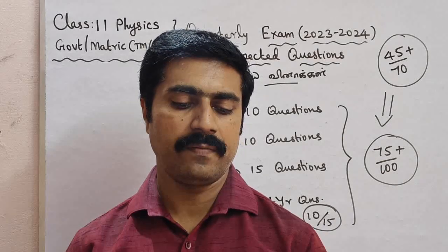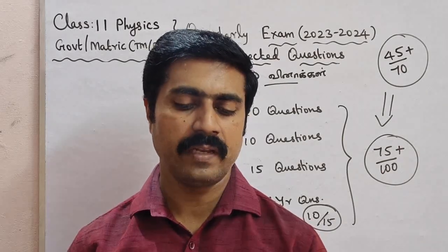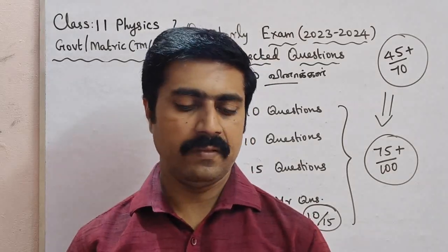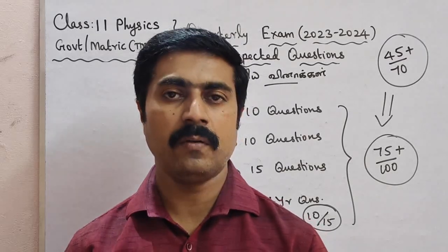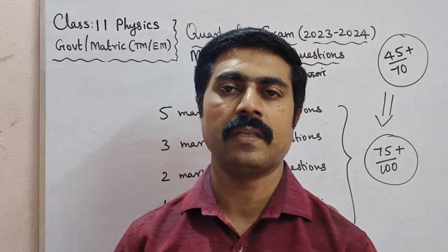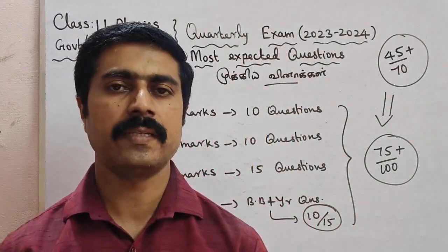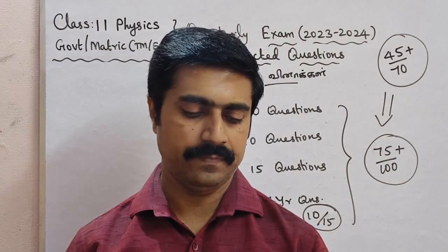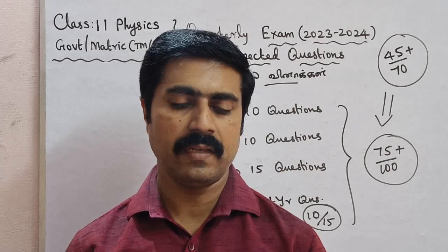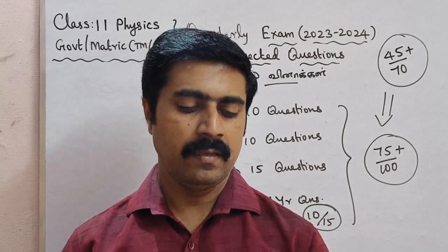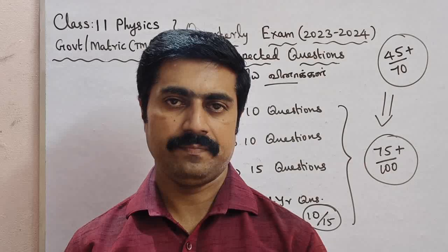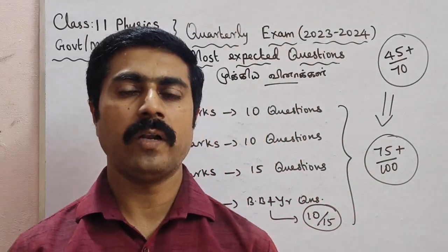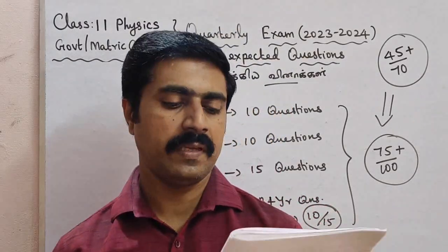Question 11: state the law of conservation of energy. Question 12: define torque and mention its unit — Unit 5. Question 13: condition in which a force cannot produce torque. Question 14: define couple. Question 15: what is the radius of gyration?